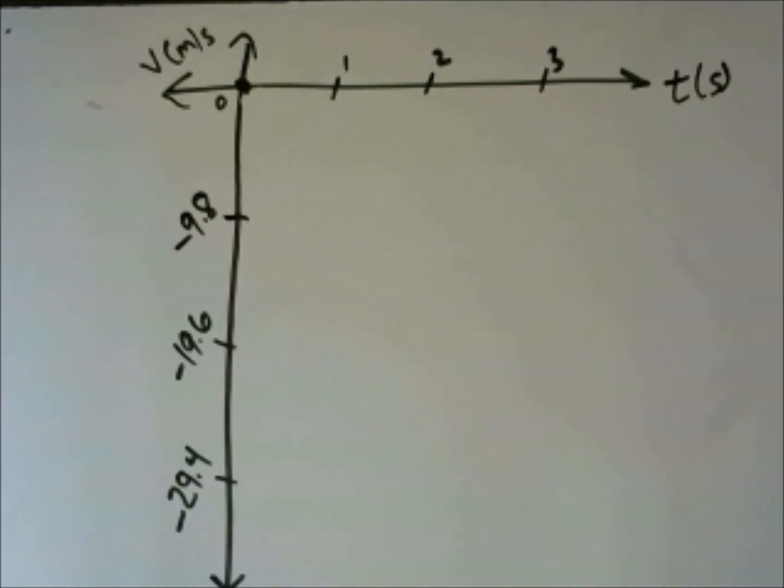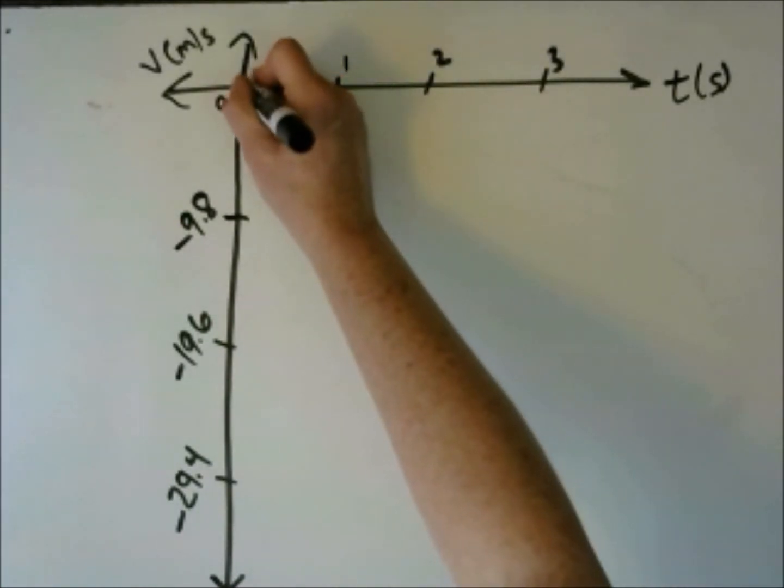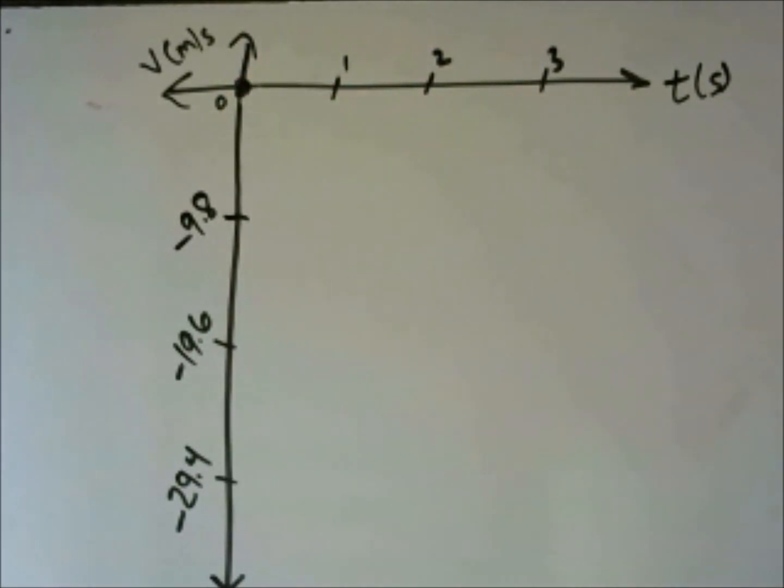Let's consider what a velocity time graph will look like for an object in free fall. It starts at a velocity of 0 meters per second, at 0 seconds. Every second, it goes in the negative direction with an acceleration of negative 9.8.